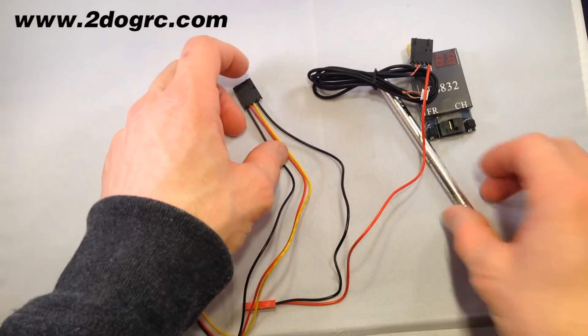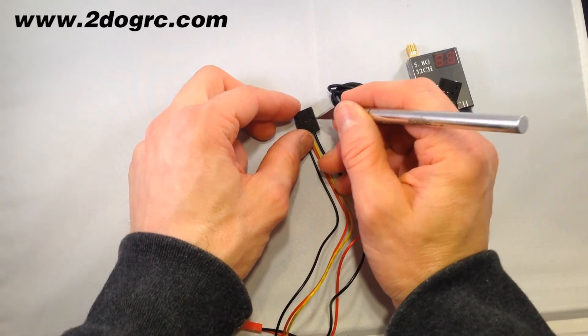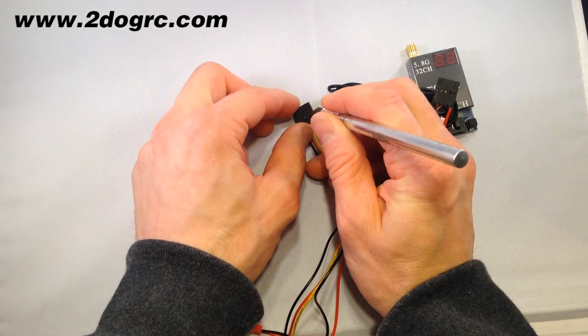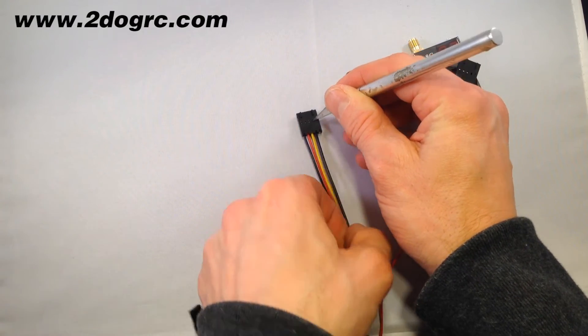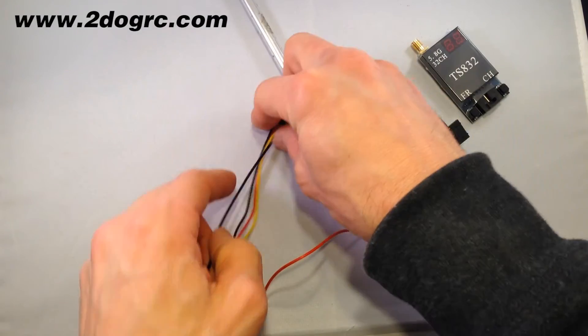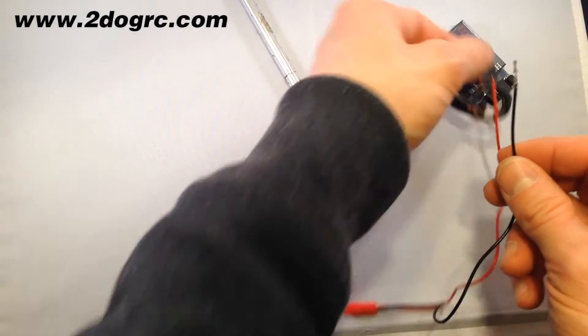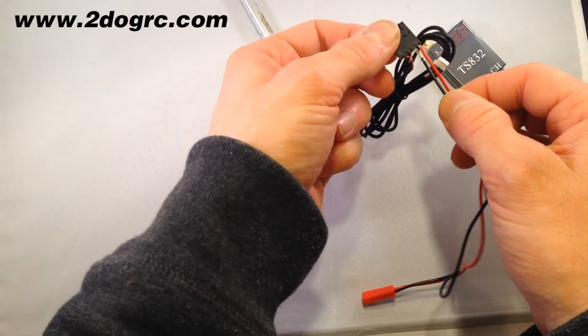Then you can do the same thing for the negative. Just pop this pin out. So you just push down and pull. And then they come right out. Okay, so now we don't need this cable anymore. Take this one, put it right in here.